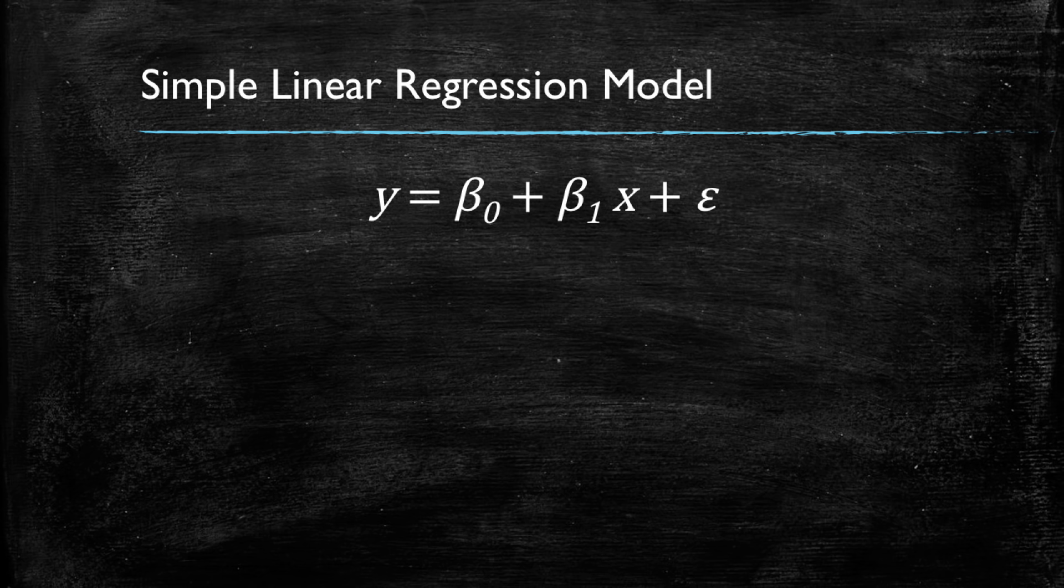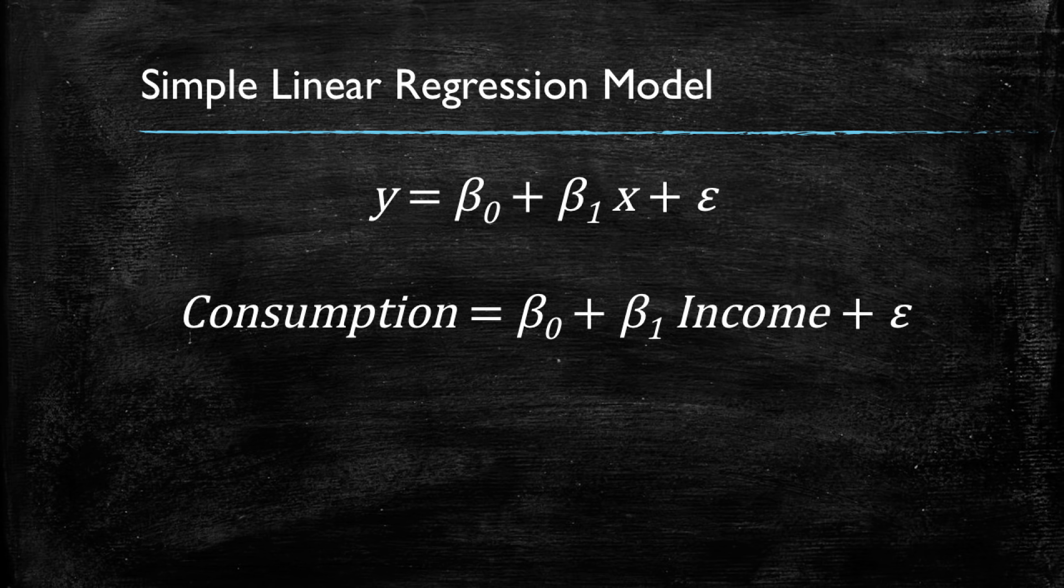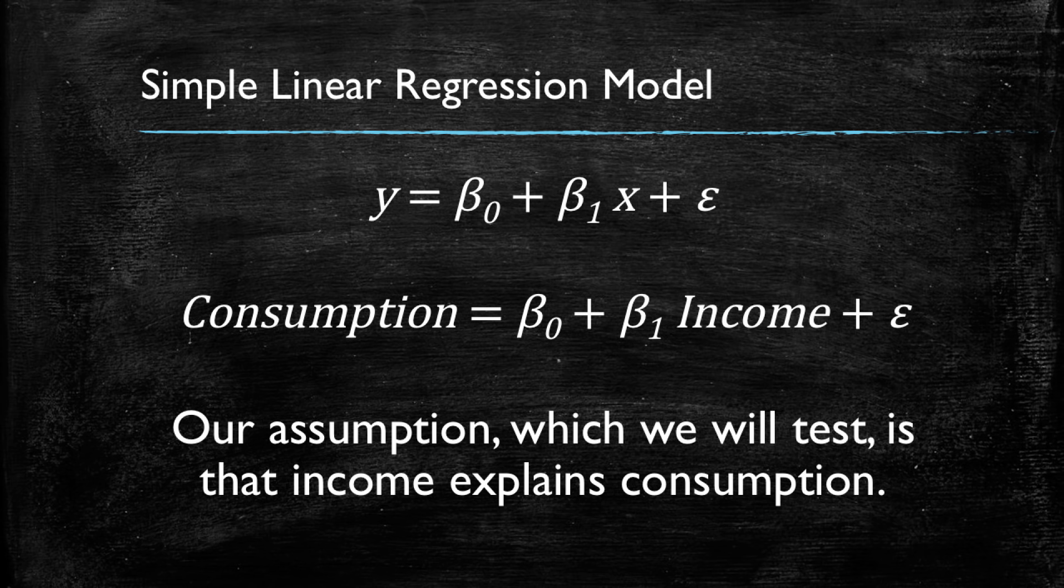Remember, our model has a dependent variable and an independent variable. And in this case, we're trying to explain consumption based on income data. So consumption is going to be our dependent variable and income is going to be our independent variable. And of course, the assumption we're making and what we want to test is if income is a good enough variable to explain consumption.